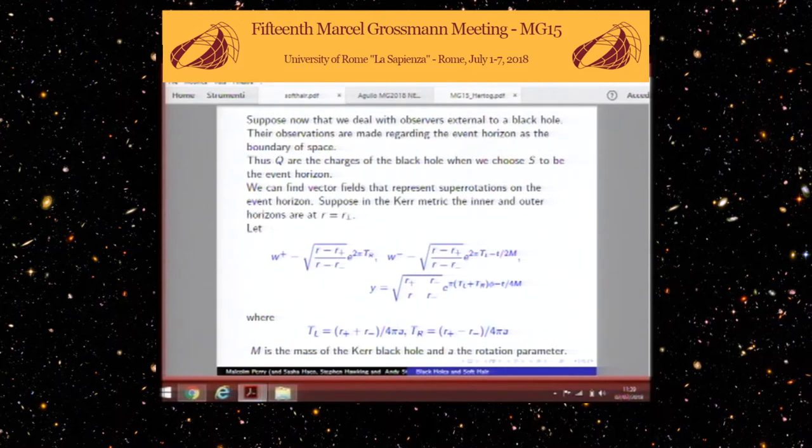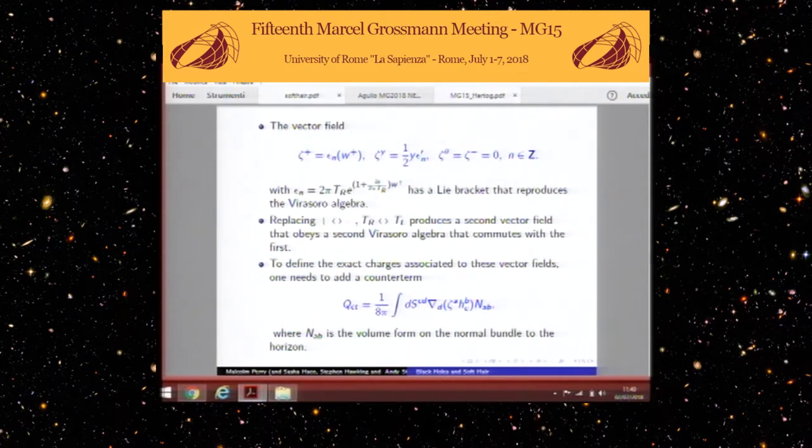You get a combination of these three new coordinates in terms of T_L, T_R, and the Boyer-Lindquist coordinates. The vector field I'm going to look at is given here. It's got a component in the plus direction given by 2πT_R e^(1+in)/(2πT_R) times w⁺. ζ_y is defined in terms of the same things. ζ_θ and ζ_⁻ are both zero, and n is any integer you like. This object, perhaps it's best not to ask how we found it because that was quite complicated. But this object has a Lie bracket which reproduces the Virasoro algebra in its centerless form.